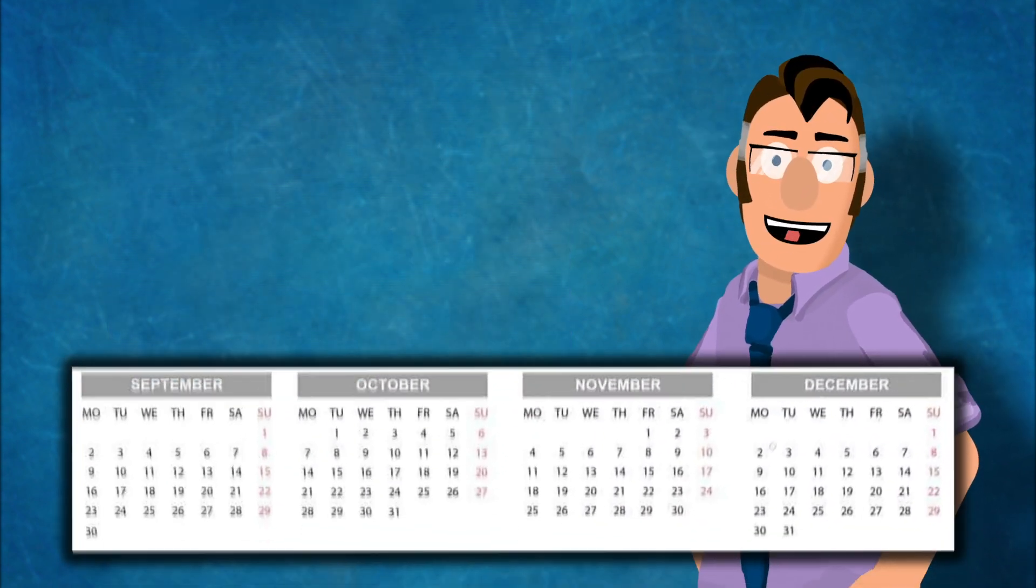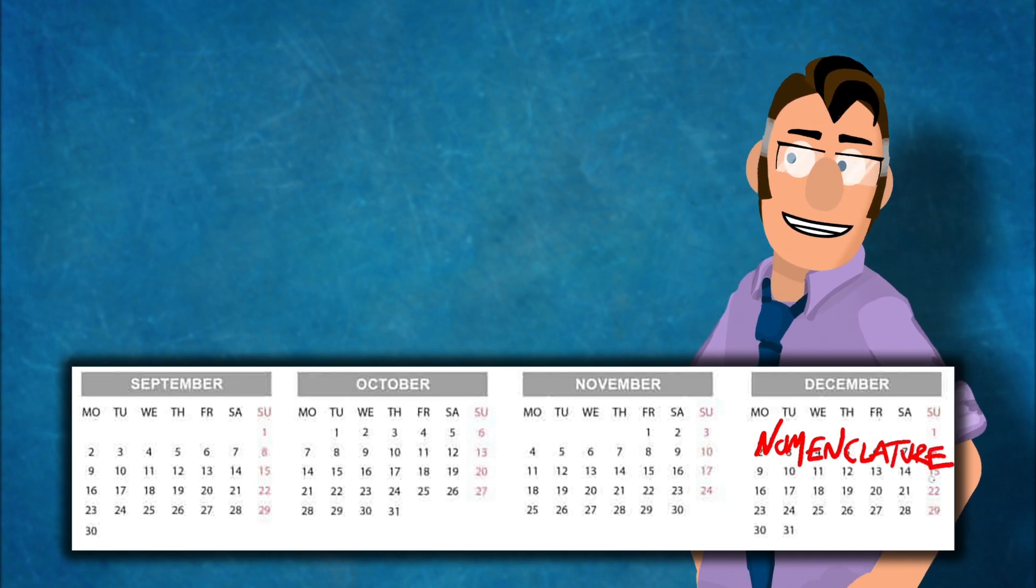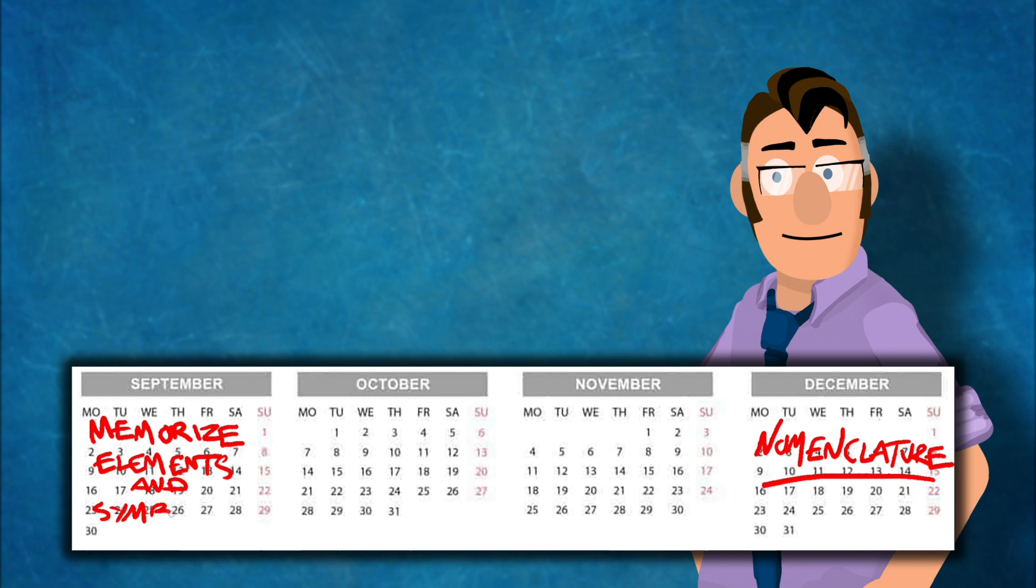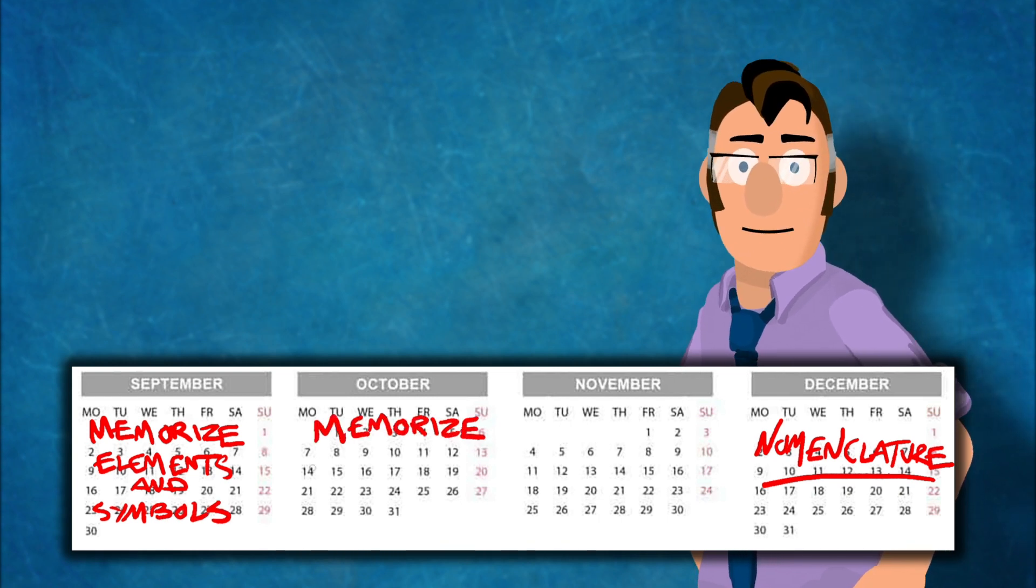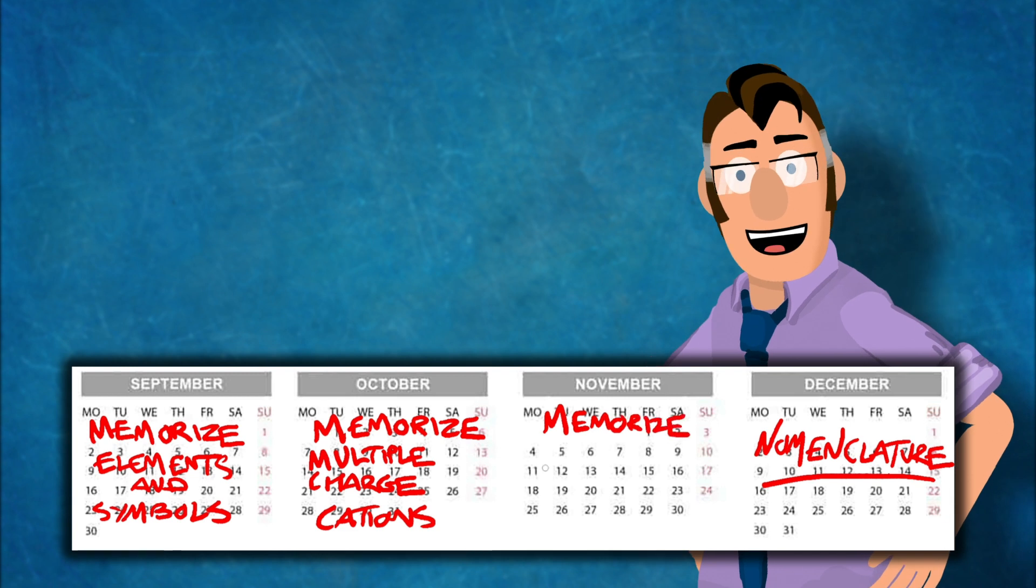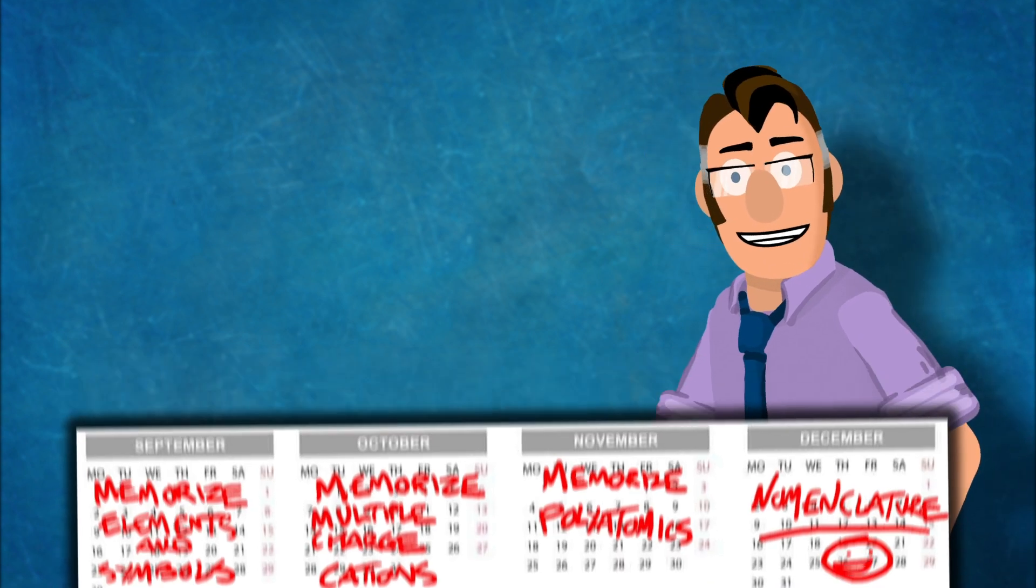Try to memorize all the elements, ions, and polyatomics ahead of time. Start a couple months out if possible. Once you have all that stuff in your head, you can focus on learning the actual nomenclature rules without trying to memorize content at the same time.